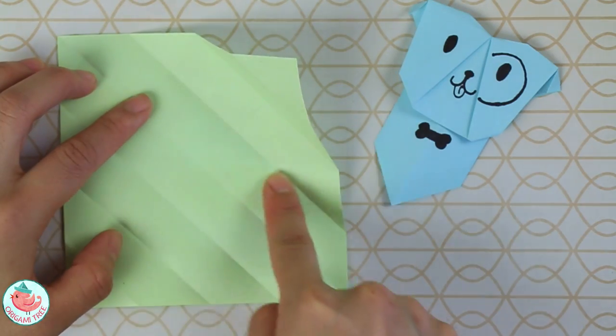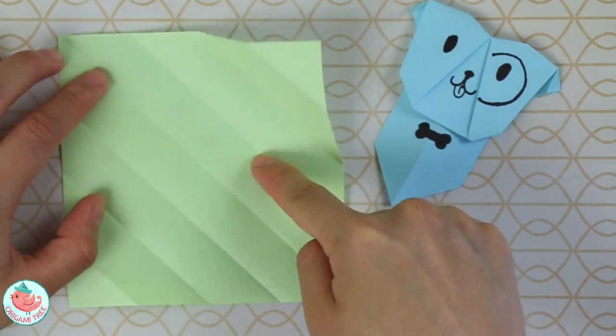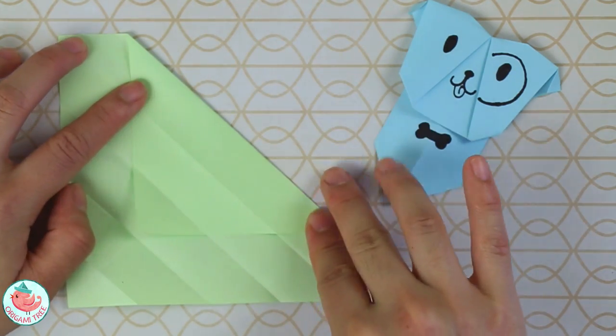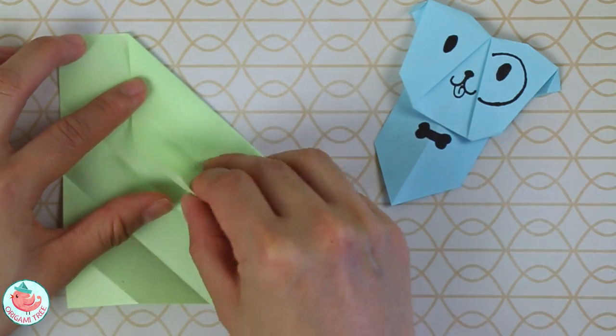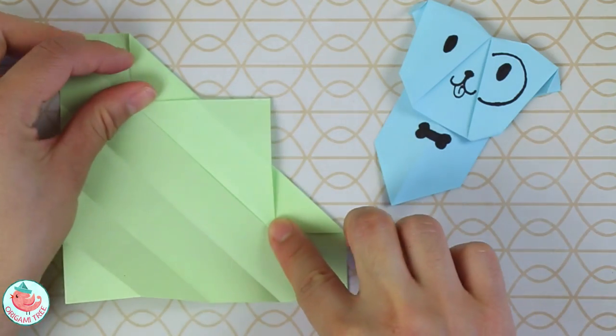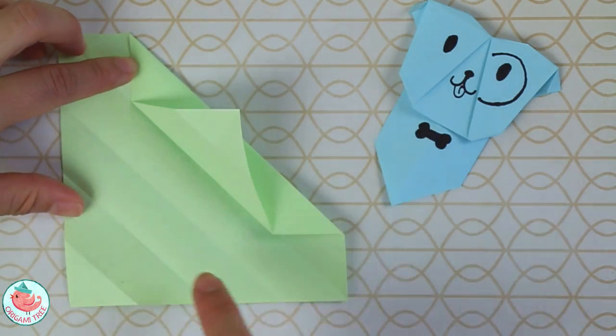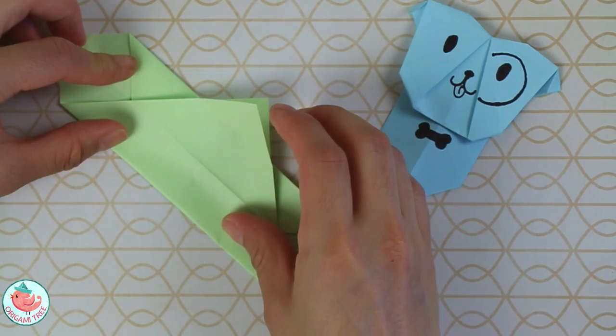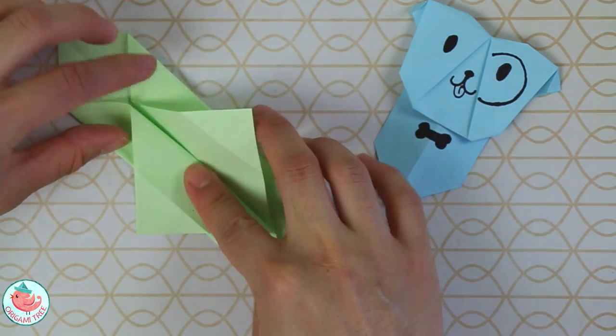Take this crease—not the center one but the one immediately to the right of it. Fold it straight down like that, and then fold over. Do the same thing on this side. Take this first crease over here, fold it over, and then fold that over like this.